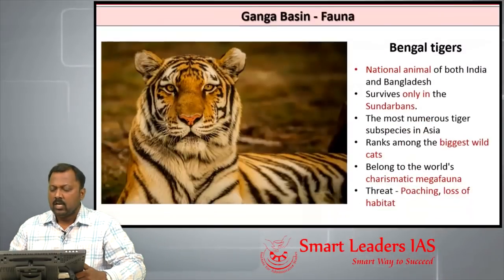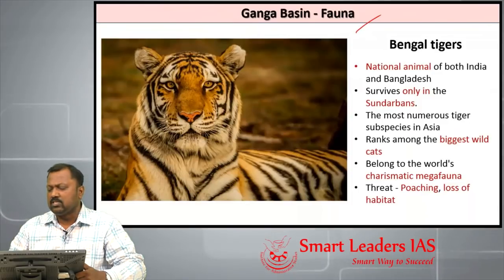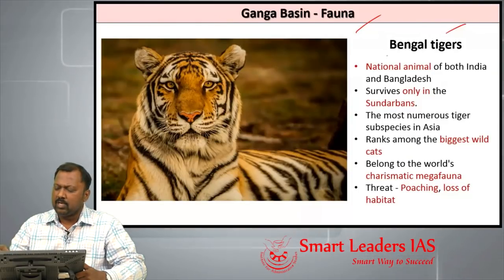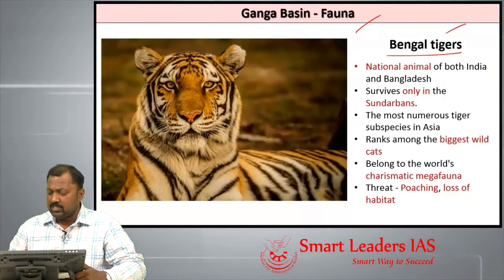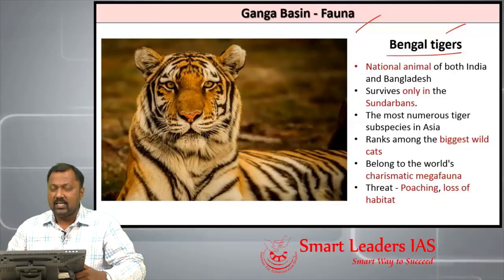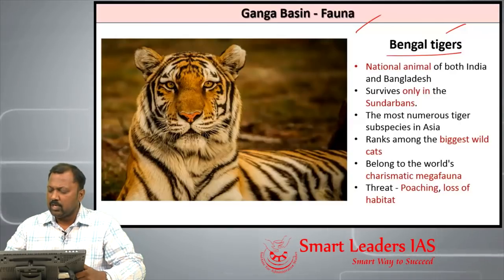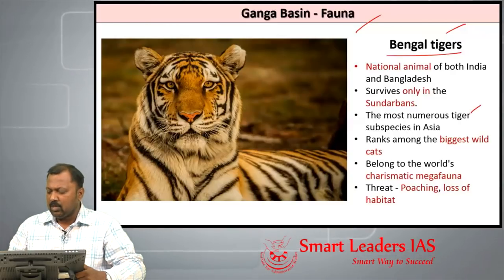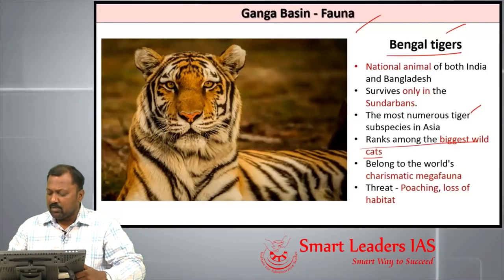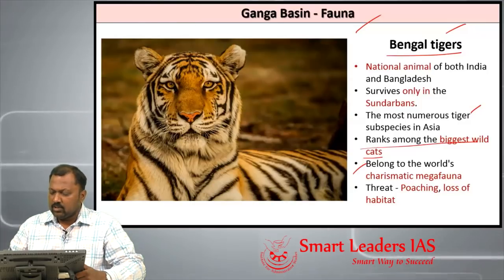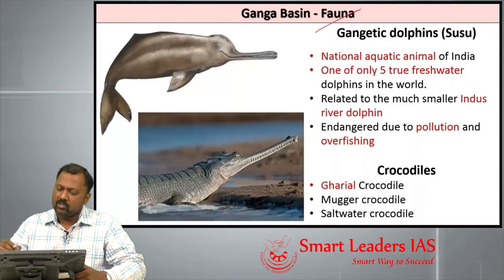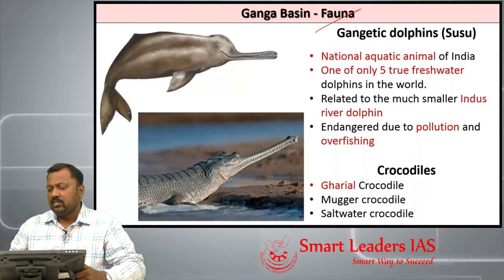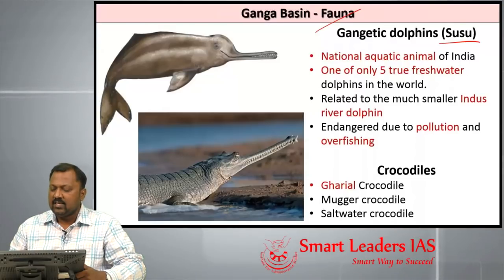The important fauna of the Ganga basin includes the Bengal tiger, which is the national animal of both India and Bangladesh. It survives mainly in the Sundarbans and is the most numerous tiger subspecies in Asia. It ranks among the biggest wild cats and belongs to the world's charismatic megafauna. The main threats to the Bengal tiger are poaching and loss of habitat.